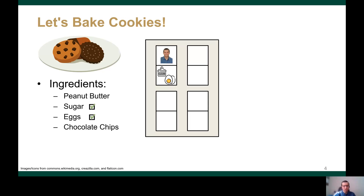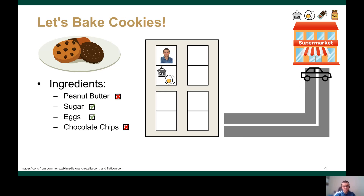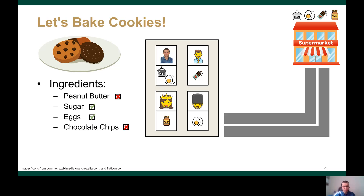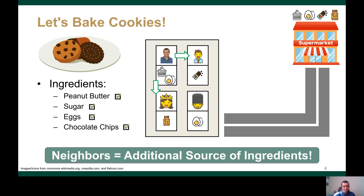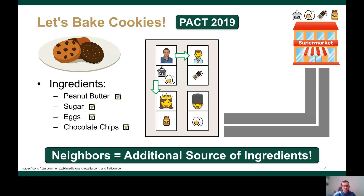However, I didn't have the other two ingredients. So for the missing ingredients, I had two choices: either to go to the supermarket and risk waiting in line or even catching COVID, or I can go and ask my neighbors if they have these ingredients and just get them from there. In this case, I found the missing ingredients at my neighbors and saved the trip to the supermarket. So you can see that I am using my neighbors as an additional source of ingredients, and this is the main idea of our PACT 2019 paper.